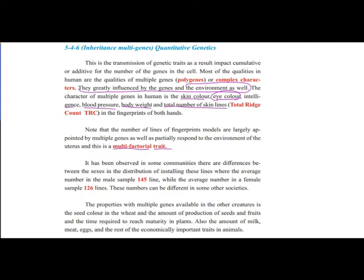It has been observed that there are differences between sexes in the distribution of fingerprint ridge lines, where the average number in males is 145 and in females is 126 lines, though these numbers can differ across societies. The property of multiple genes is also seen in seed color in wheat, as well as production of fruits, time to reach maturity in plants, and economically important traits such as milk, meat, and egg production in animals.